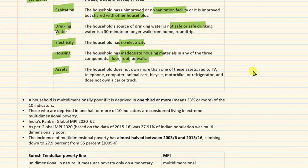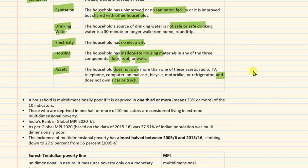If the household does not own more than one of these assets — radio, TV, telephone, computer, animal cart, bicycle, motorcycle, or refrigerator — and does not own a car or a truck, then it is deprived on the assets indicator. Two conditions apply: first, the household must not own a car or truck; second, it must not own more than one of the listed assets. This measures the assets indicator of the standard of living dimension.